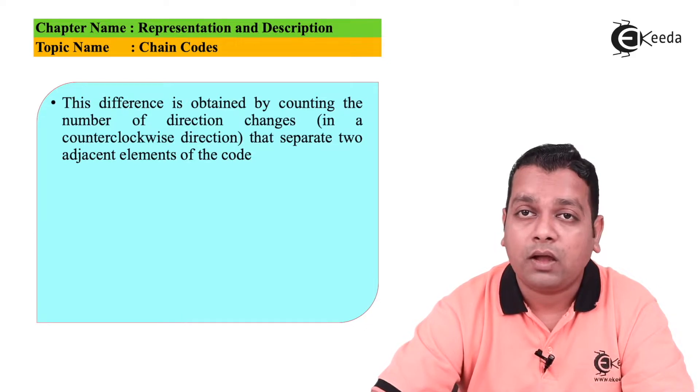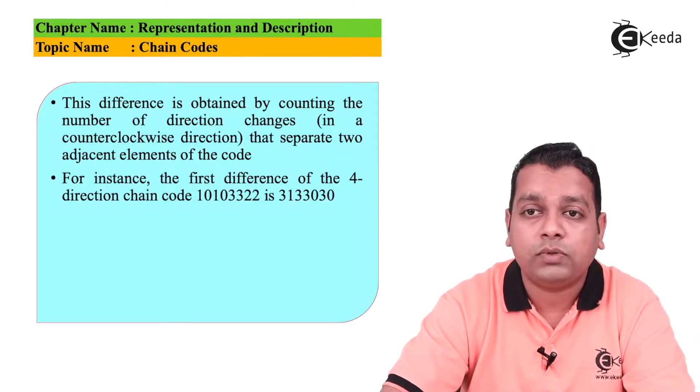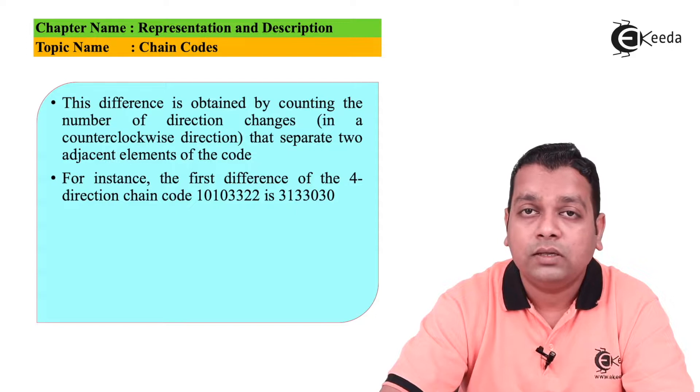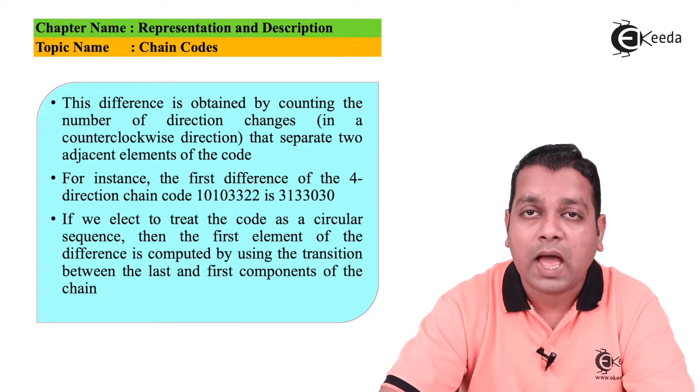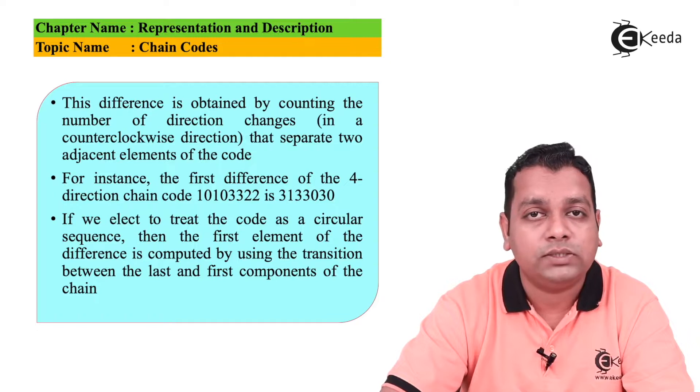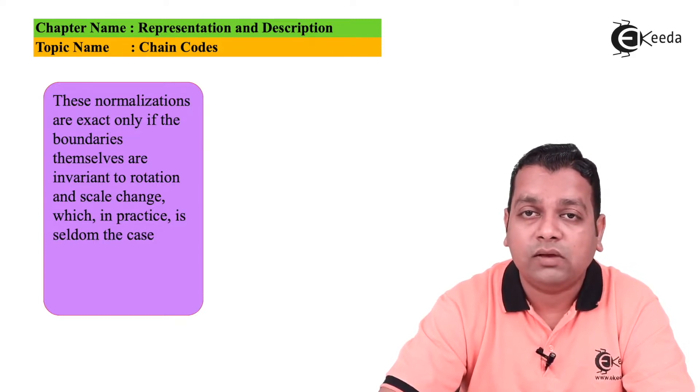This difference is obtained by counting the number of directional changes, that is in the counterclockwise direction, that separates two adjacent elements of this chain code. For instance, the first difference of the four-directional chain code represented as 10103322 is 3133030. If we elect to treat the code as a circular sequence then the first element of the difference is computed by using the transition between the last and the first components of this chain.